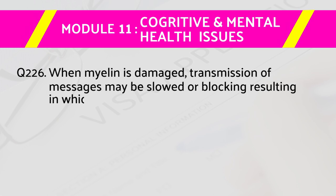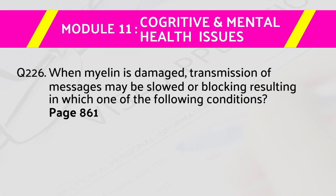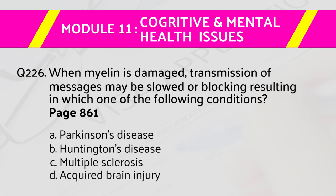Question number 226: When myelin is damaged, transmission of messages may be slowed or blocked, resulting in which one of the following conditions — page number 861. Answers are: a) Parkinson's disease, b) Huntington's disease, c) multiple sclerosis, d) acquired brain injury. The right answer is c) multiple sclerosis.